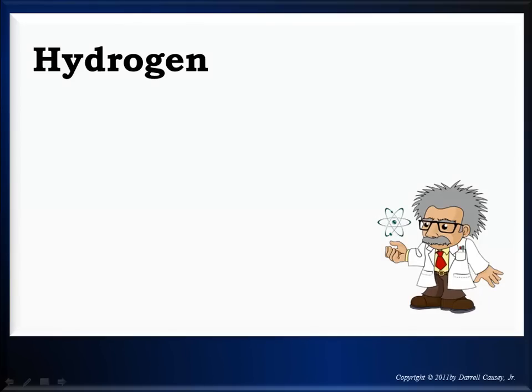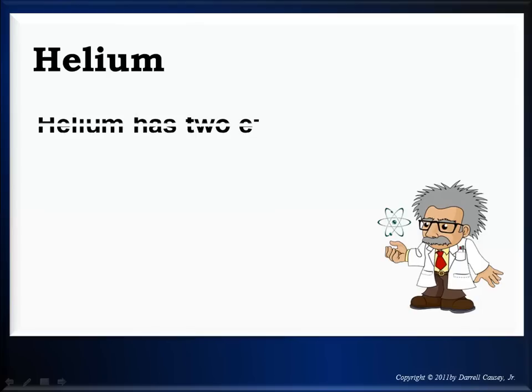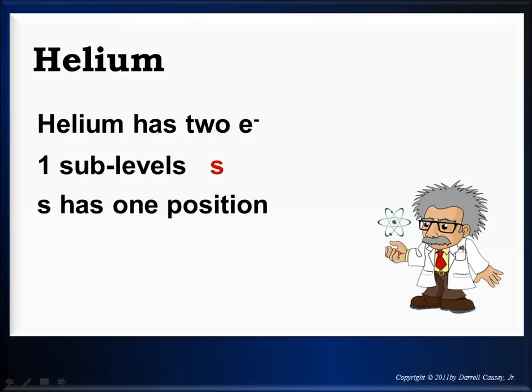Alright, now with all this information, we should be able to go through and write configurations. And we should be able to do orbital notations. So let's look at some configurations here. Hydrogen has 1 electron, so its energy level is going to be 1. That means it has 1 sub-level. That sub-level is going to be s, and s has 1 position. 1s1. Helium, 2 electrons. Still the first energy level. Still just 1 sub-level. That sub-level is s. It has 1 position, but it can hold 2 electrons. So there's helium's electron configuration.